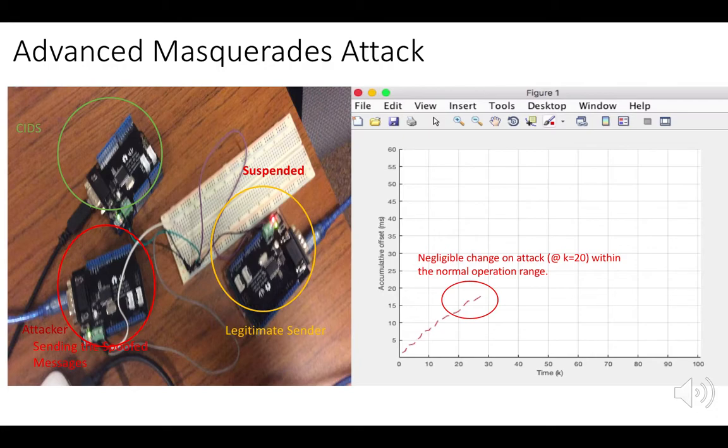It is in the normal operational range and will not be detected by the CIDS as an abnormality. This is because the Advanced Masquerade Attack exploits weaknesses in the architecture of CIDS.